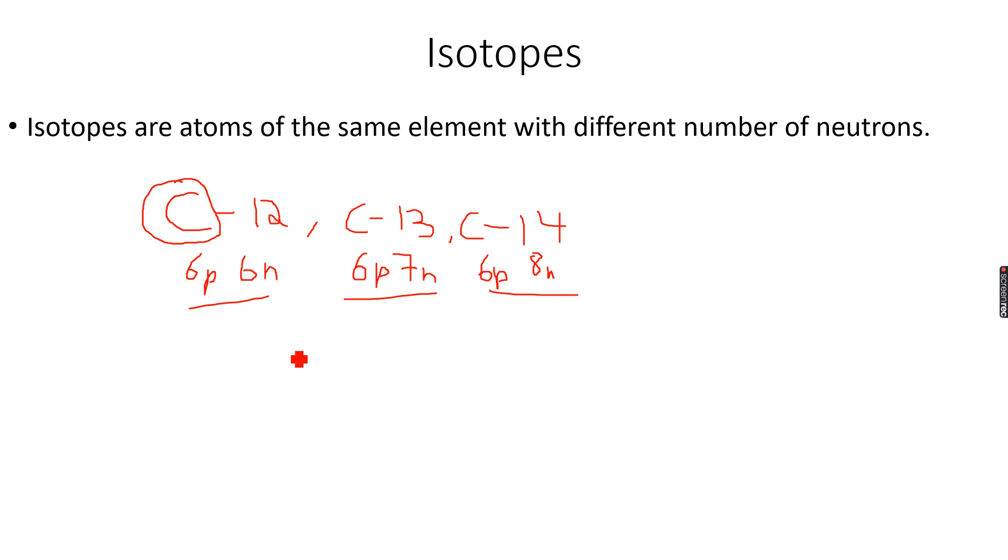All atoms of an element will have the same number of protons and therefore the atomic number is an intrinsic property of an element because all elements when differentiated with each other, all of them have different number of protons. But every atom for one particular element will have the same number of protons.